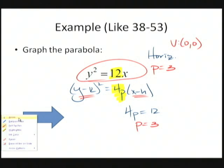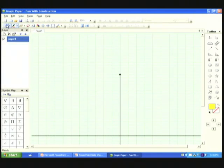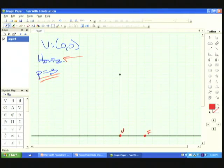So let's graph that one. I've got vertex at (0, 0), this is going to be horizontal, and P = 3. Since P is 3 and positive, I go in a positive direction 3 units but in a horizontal way, so I go positive to the right 3 units. Here's the vertex, here's my focus. A quick sketch of this parabola is going to look like this.